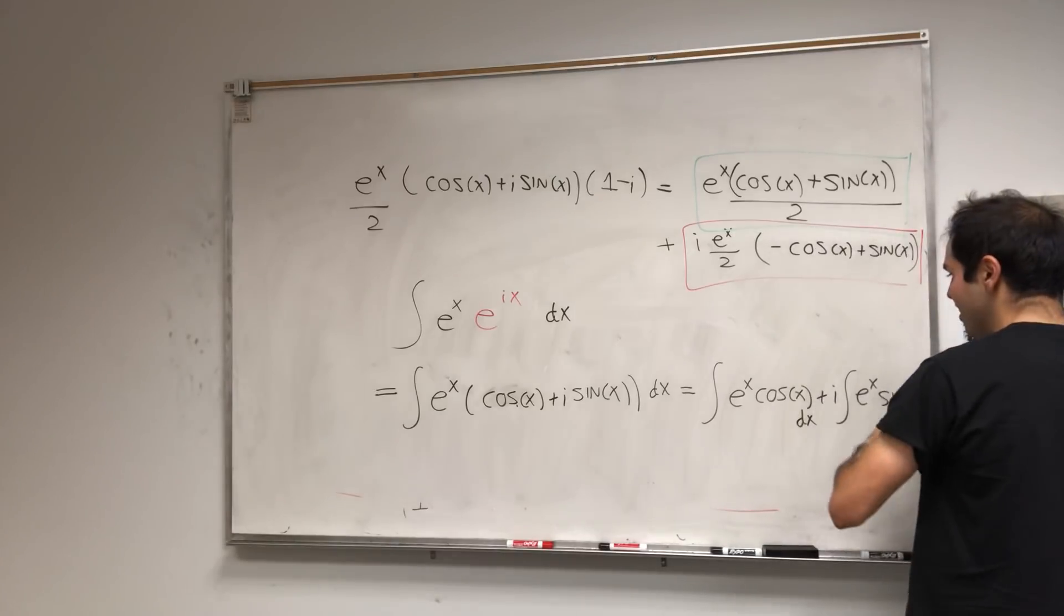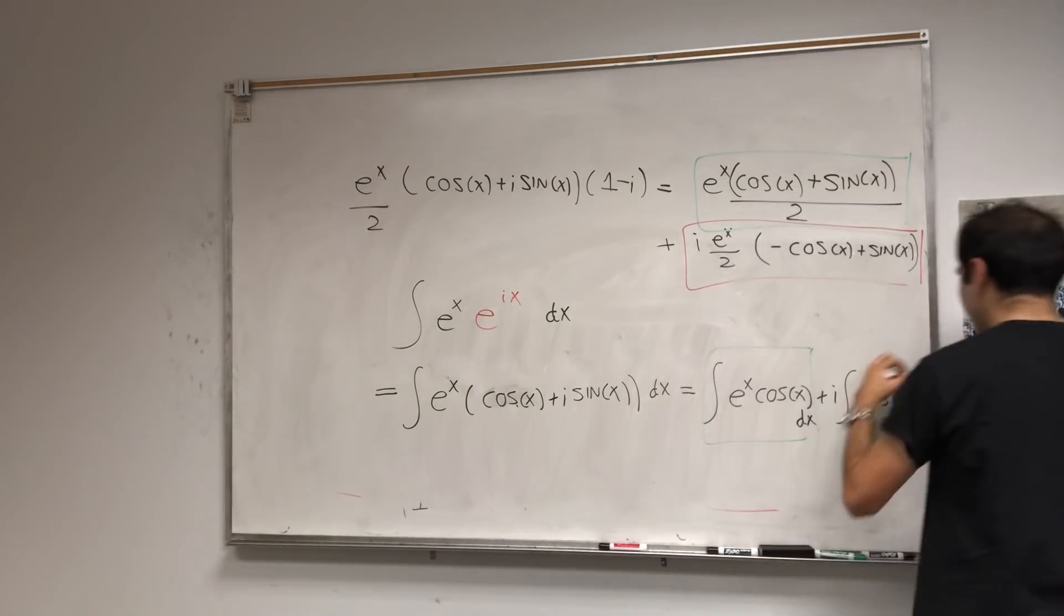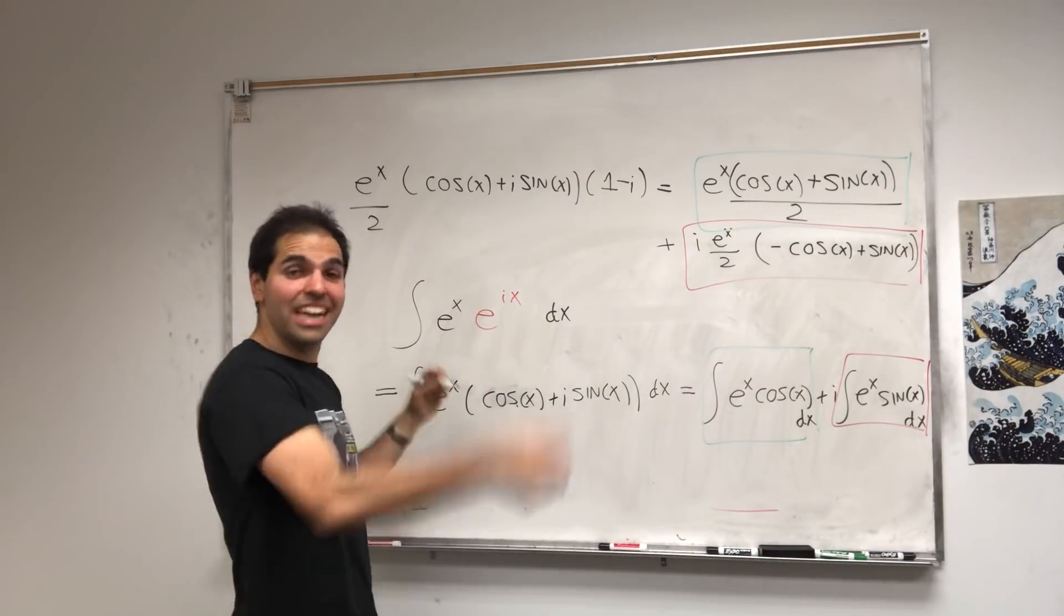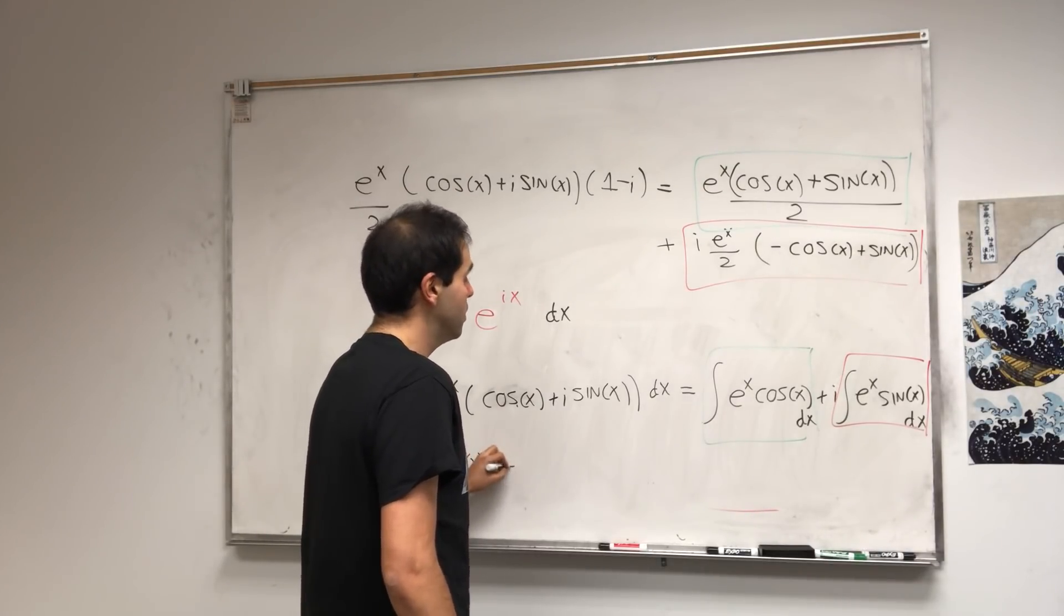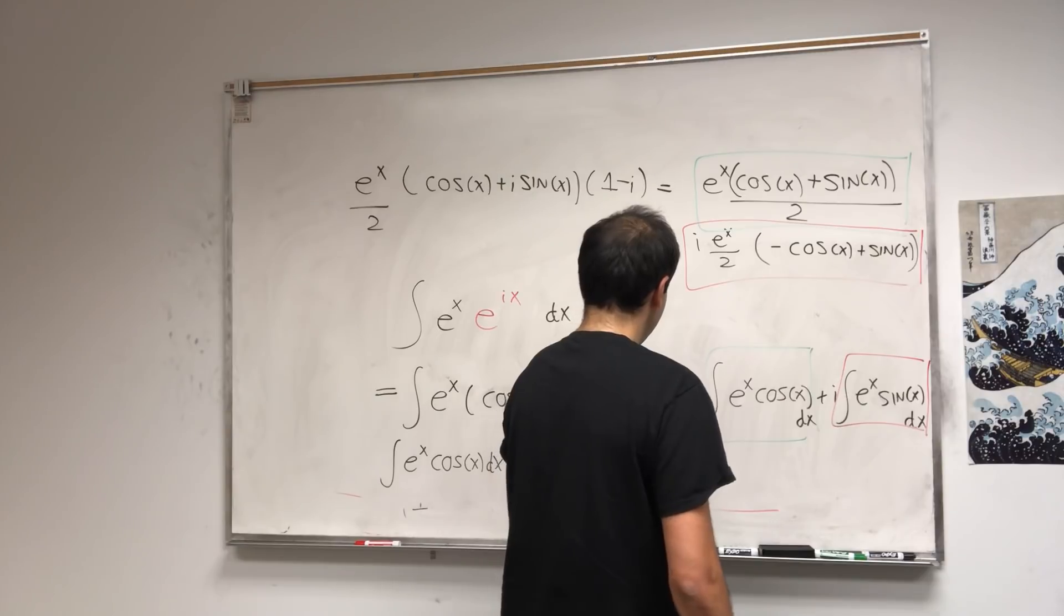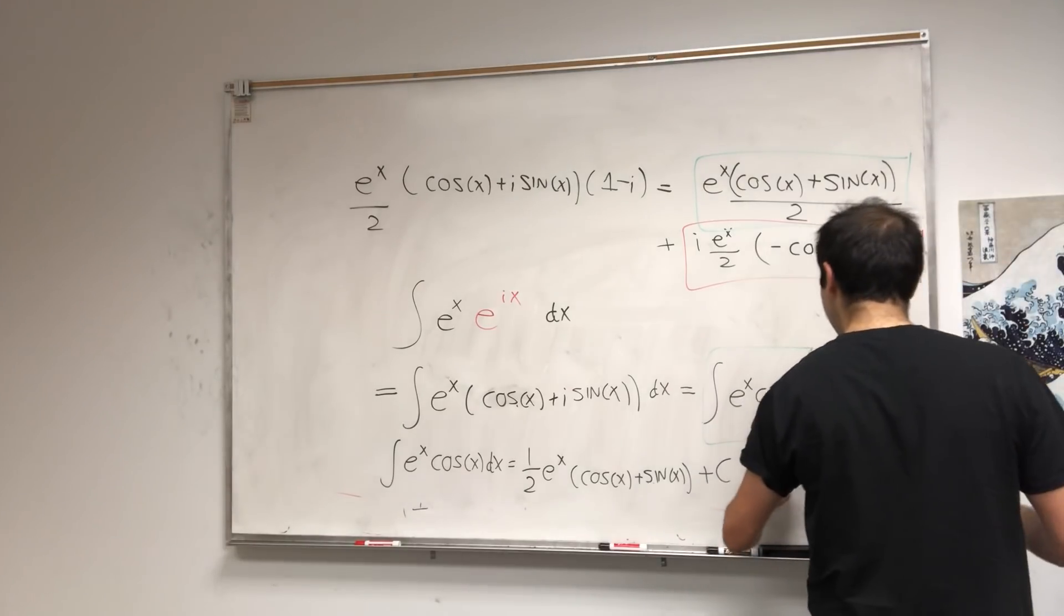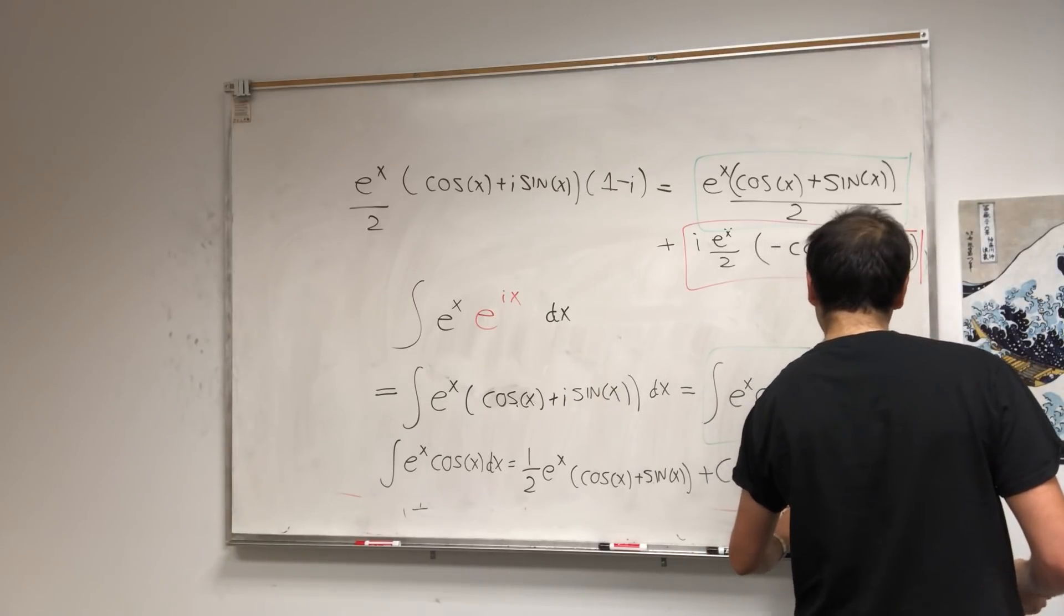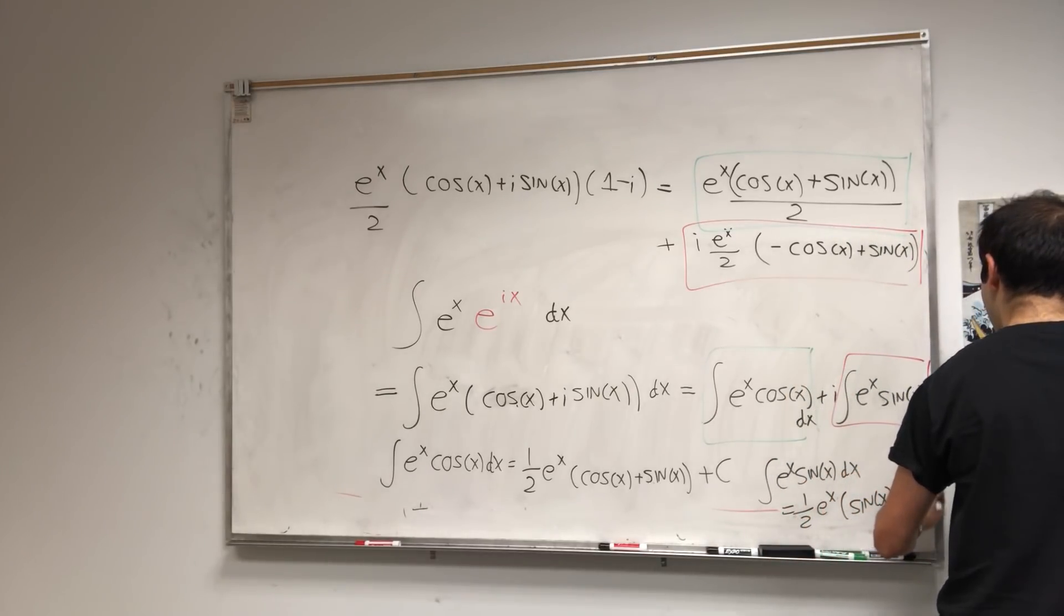And now compare. The real part of this has to be the real part of this. The imaginary part of this has to be the imaginary part of this. So just comparing, we actually get two integrals at once. Integral e^x cos(x) dx equals one-half e^x (cos(x) + sin(x)). And in fact, integral of e^x sin(x) dx becomes one-half e^x (sin(x) - cos(x)) plus a constant.